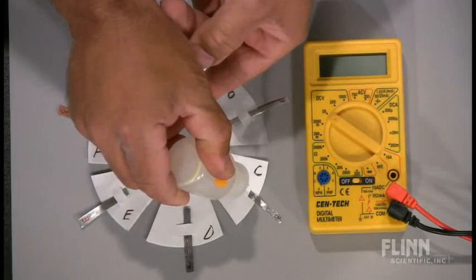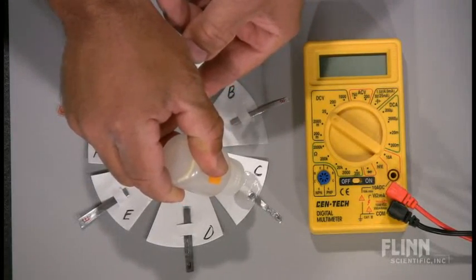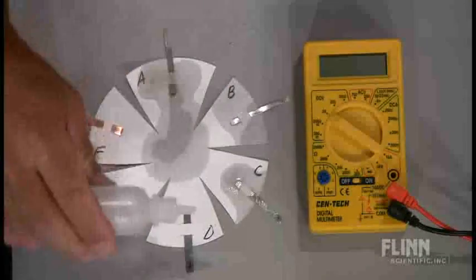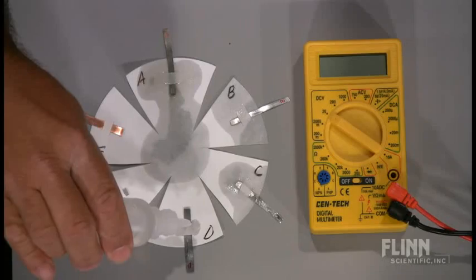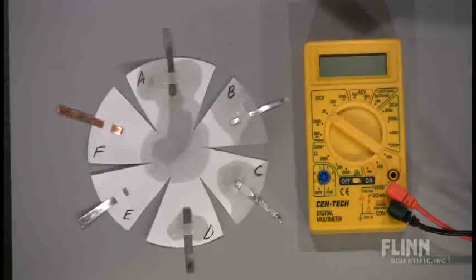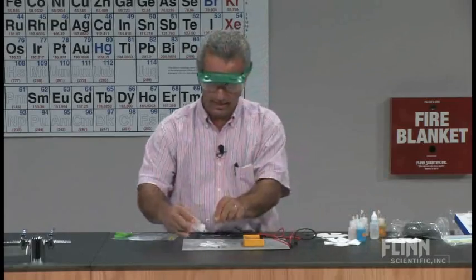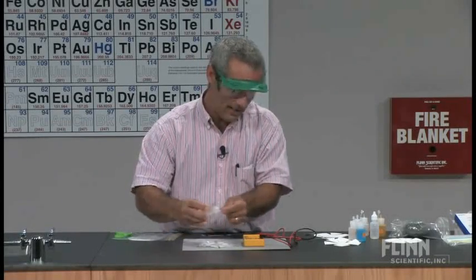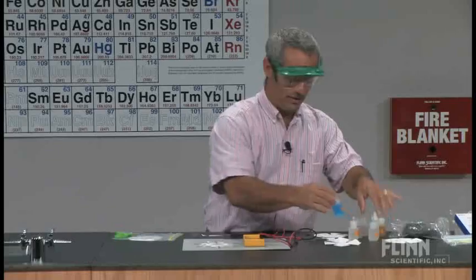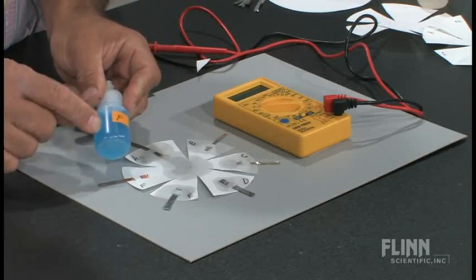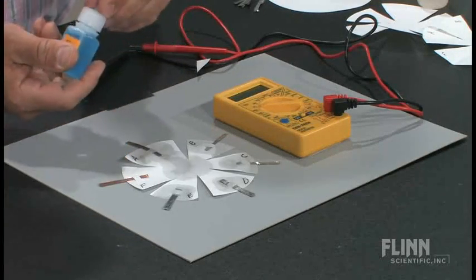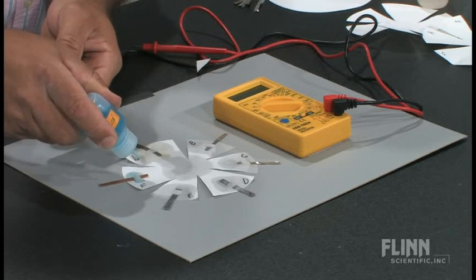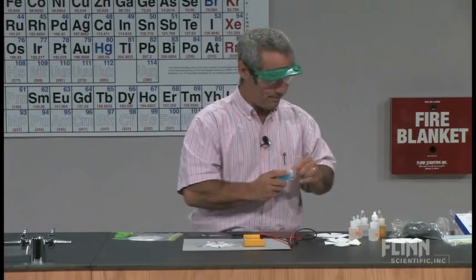Solution C goes on C. D on D. E on E. And F. You kind of have an inkling of what F is there, and this probably helps you, knowing that the F solution is colored. So we've got five drops of that there.